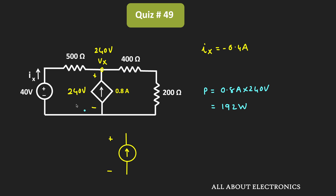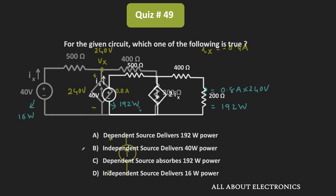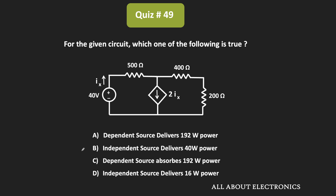So here, the independent voltage source is absorbing 16 watts, while the dependent current source is delivering 192 watts. For the given circuit, looking at the four options, only option A is the correct answer.